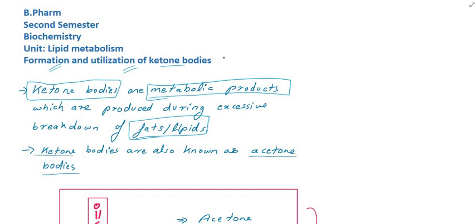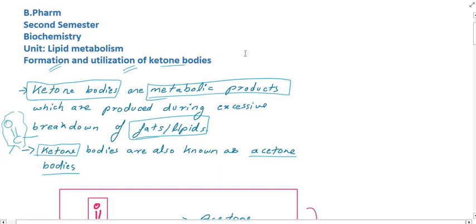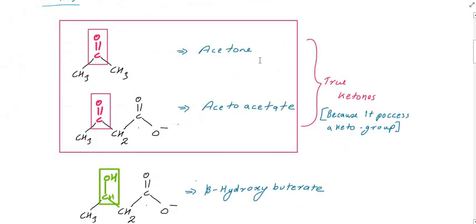Ketone is the functional group. The ketone bodies are also known as acetone bodies. The acetone structure has an R group which is a C-A-C group, and the ketone functional group is C double bond O.